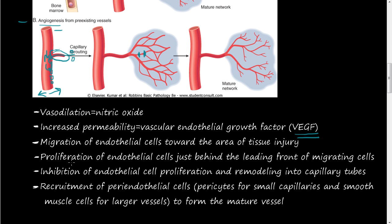Once the endothelial cells are out in the extracellular matrix, they start proliferating. Proliferation of endothelial cells occurs just behind the leading front of the migrating cells. The leading cells are out front, and the ones behind start proliferating and forming this new sprouting capillary.